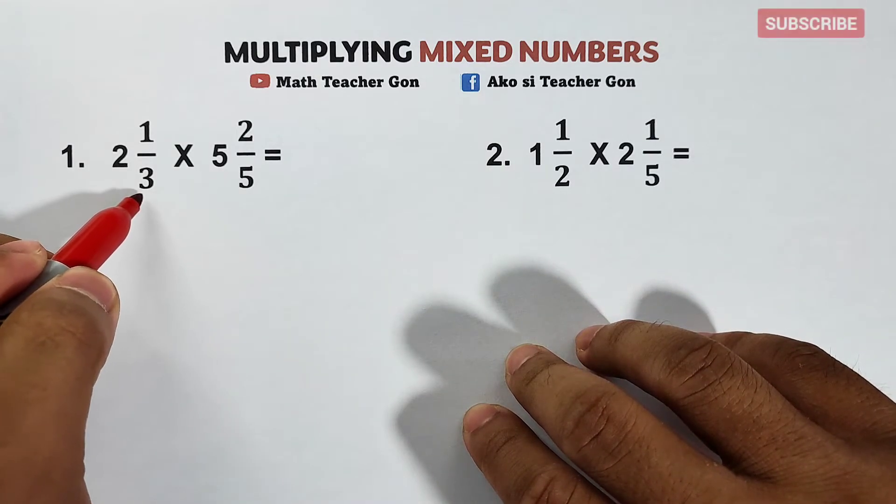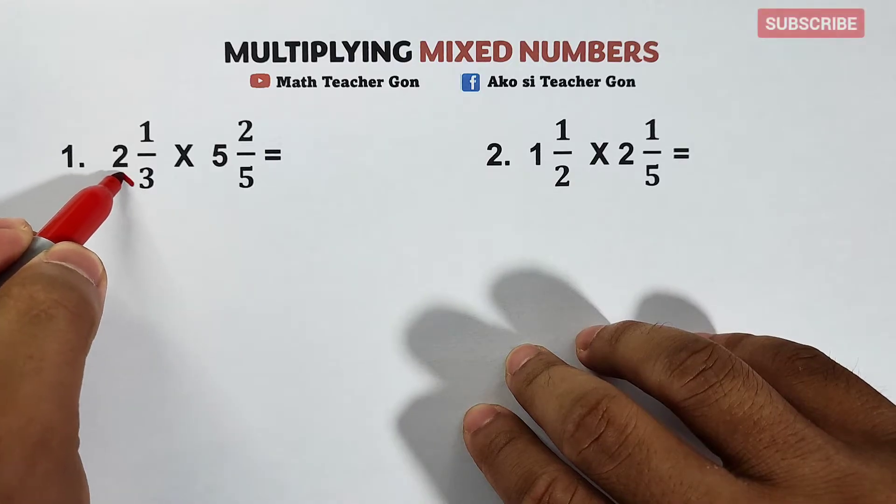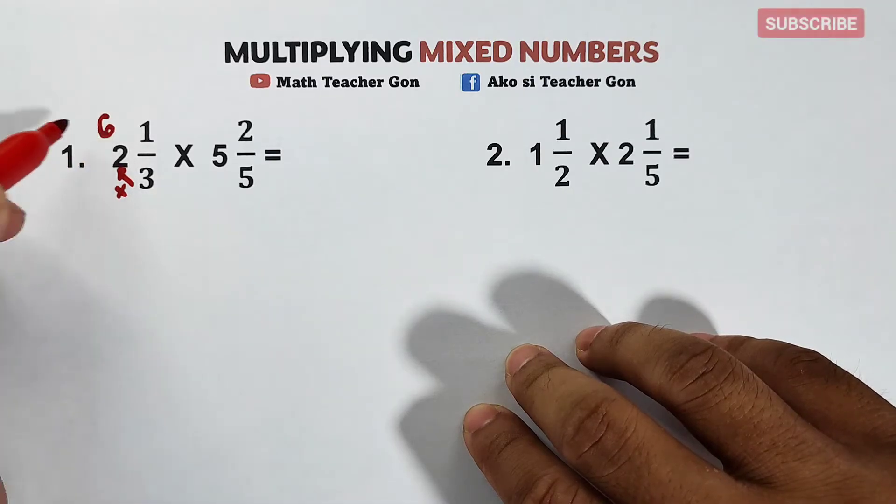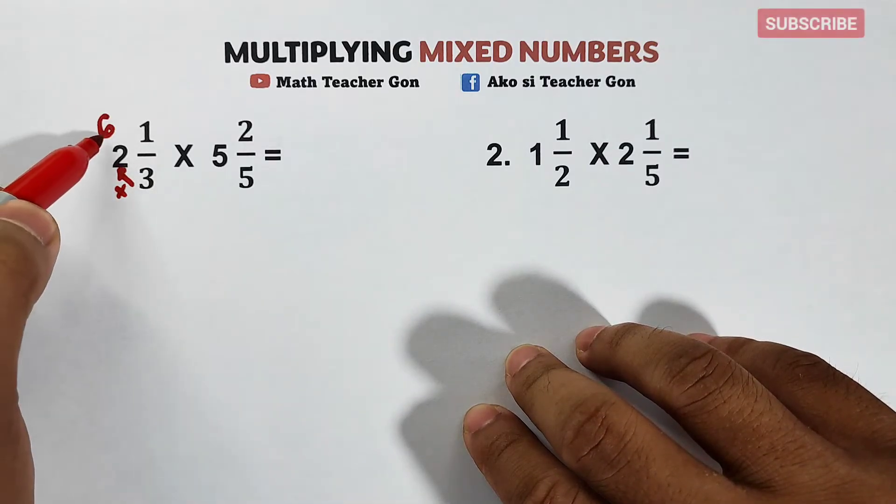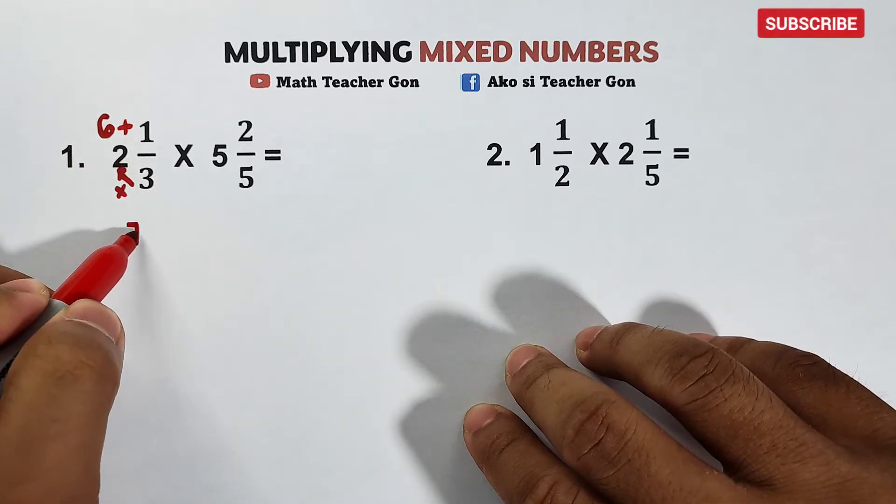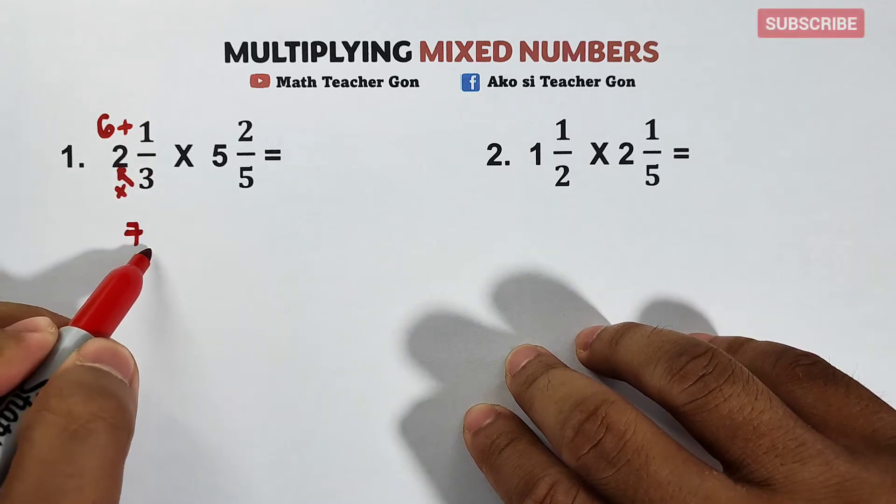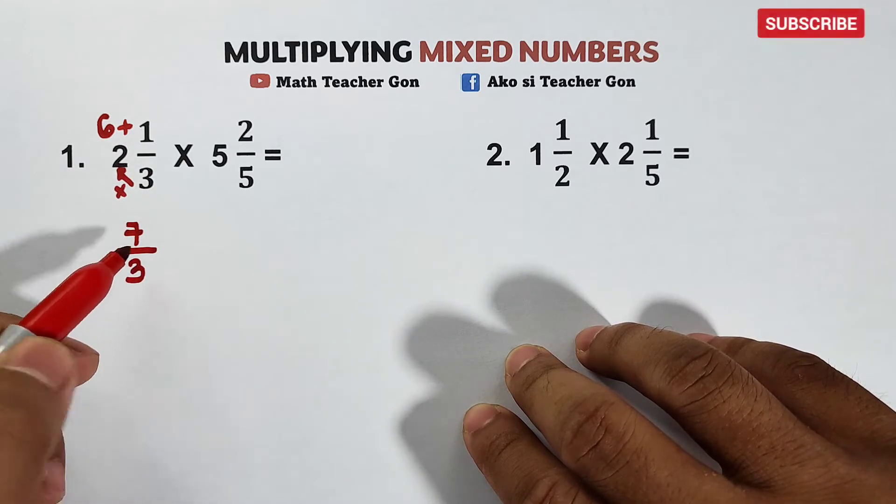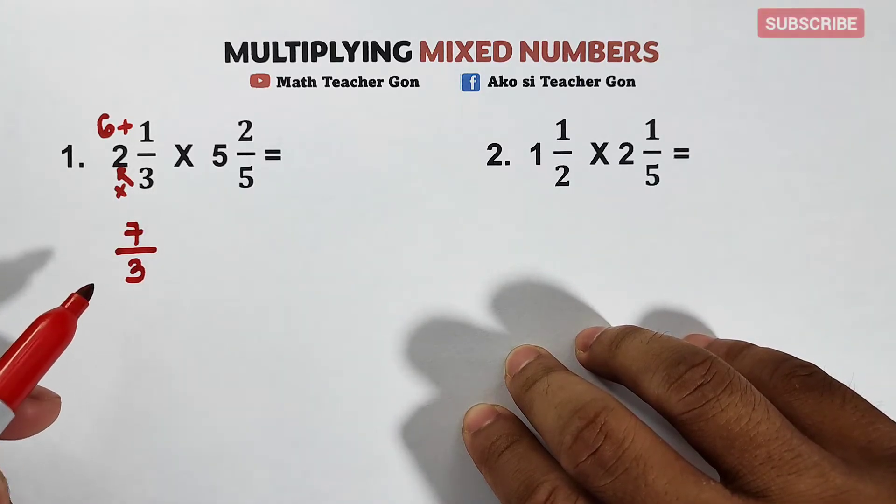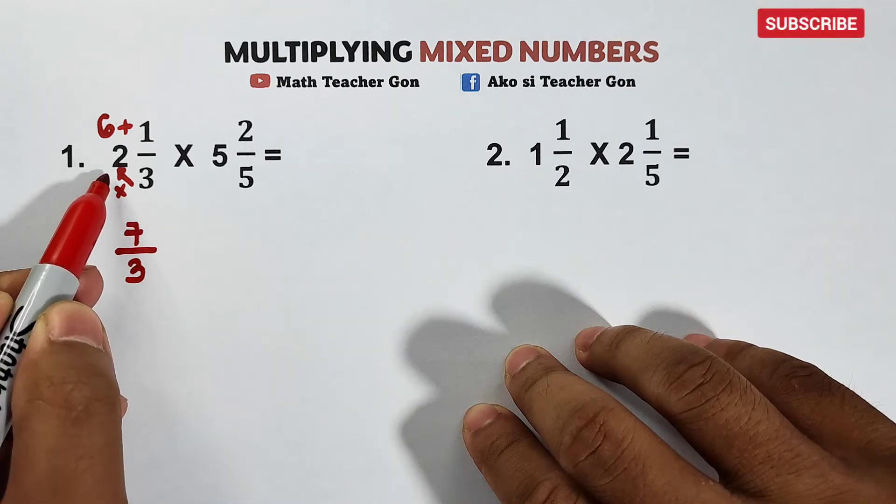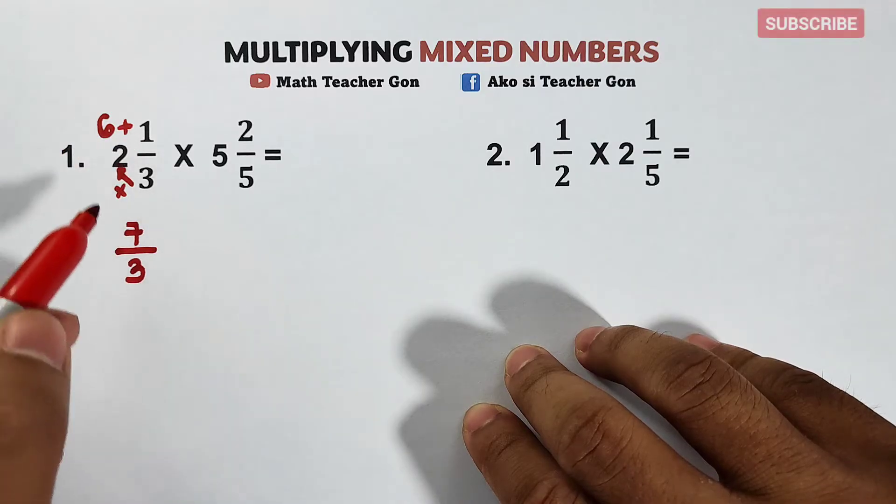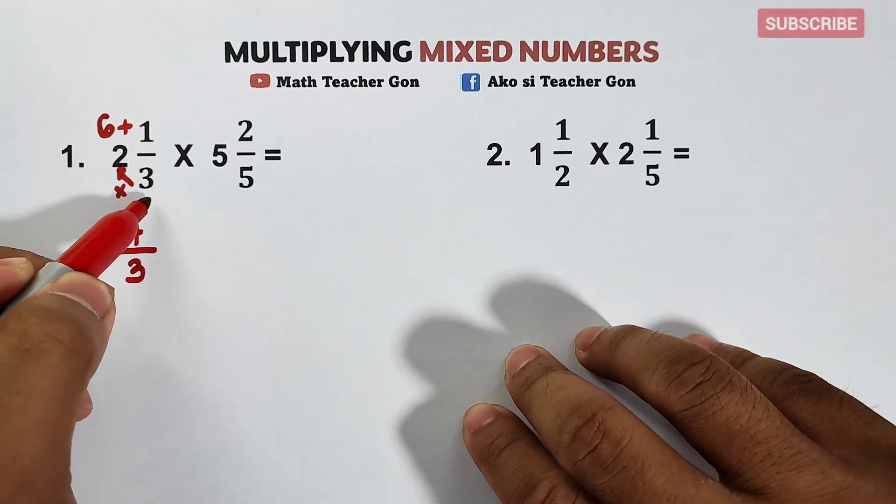First, multiply your denominator to the whole number, that is 3 times 2, which is equal to 6. And then add this 6 to your numerator, 6 plus 1, that is equal to 7. And then copy your denominator, 3. So let me repeat, how did we convert this mixed number into improper fraction? Denominator times the whole number, 3 times 2, 6. Then add the product to your numerator, which is 7. Then copy your original denominator.